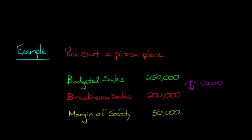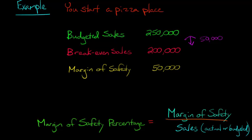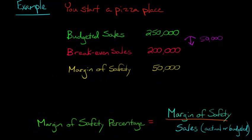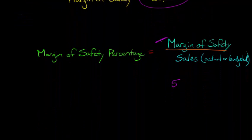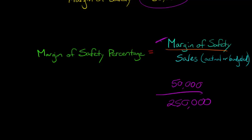We can also think about the margin of safety in terms of a percentage — what percent could sales fall before we start incurring losses? To calculate the margin of safety percentage, you just take the margin of safety, that $50,000 buffer, in the numerator, and divide it by the sales — whether actual or budgeted. In this case with our pizza place, we looked at budgeted sales. So we take $50,000 divided by $250,000, and that gives us 0.2, or 20%.